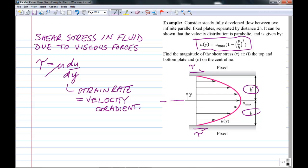So all we need to do is calculate the velocity gradient at the location of interest and multiply it by the dynamic viscosity. Let's start with the upper plate, which is at y equals h. So we're going to get the shear stress at y equals h equals mu and then we take du dy at y equals h.